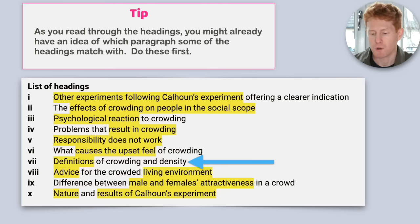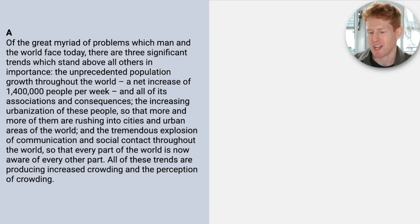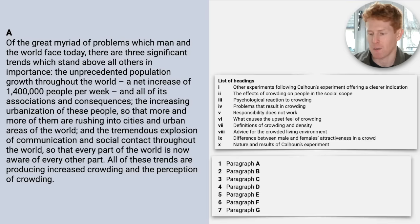So for example, when I read the heading seven, definitions of crowding and density, I thought, I know where the answer is. I know which paragraph this is. So I would do that question first, because as a result, I can begin to eliminate the different headings. But because we're going to do this together, we're going to start at A. So we've got paragraph A, we've got our list of headings, and we've got our questions, number one to seven.